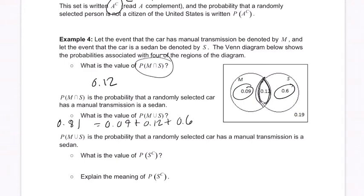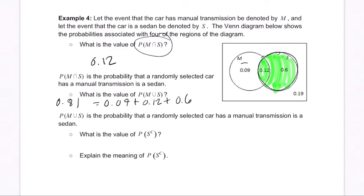A complement of a sedan. The sedan is really these two numbers put together. It is the 0.12 in the intersection, so it's this number right here, and it's the 0.6 out here as well. So it's 0.6 plus 0.12. Here we're dealing with complements, and that just means we're going to do 1 minus 0.72, the sum of these two pieces right here, and that's 0.28.